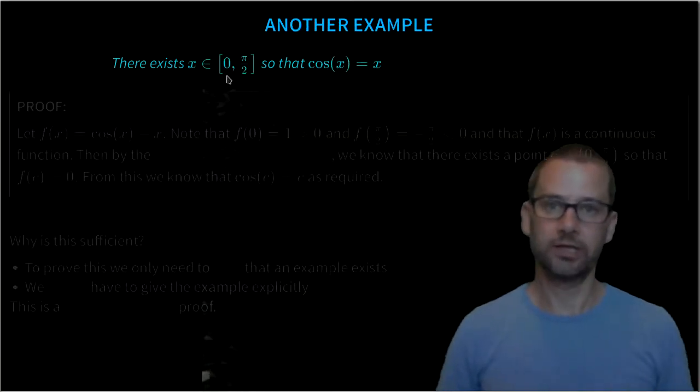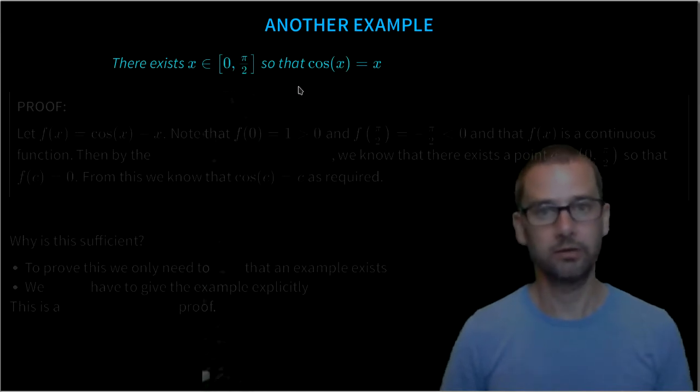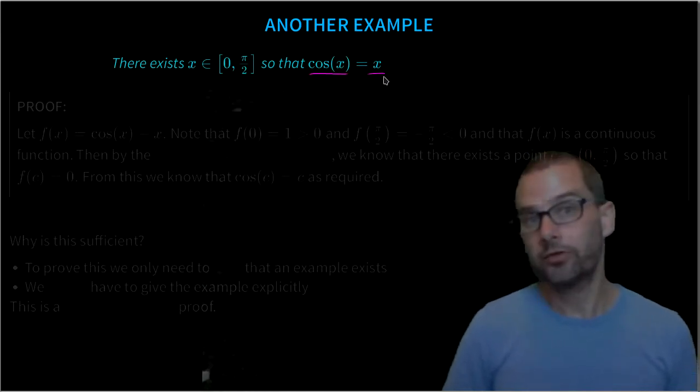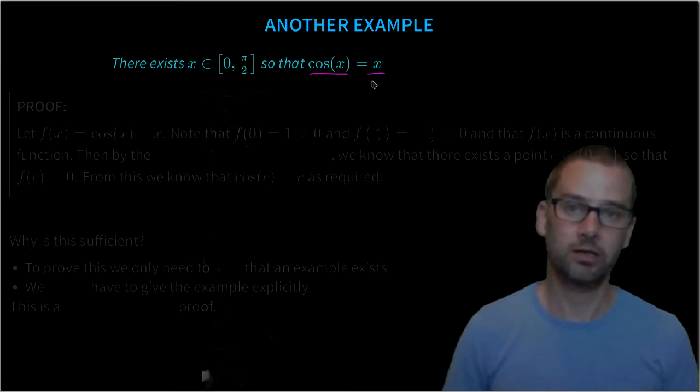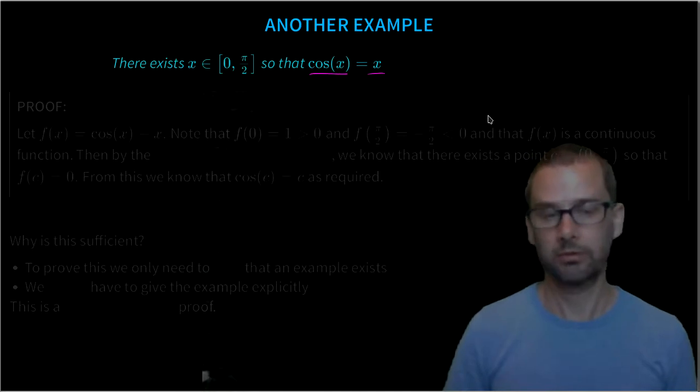Another example: there exists an x in the closed interval [0, π/2], so all real numbers between 0 and π/2, so that cos(x) = x. Those of you who have taken a standard first-year calculus class will recognize this as an intermediate value theorem sort of problem. So let's prove it using that.